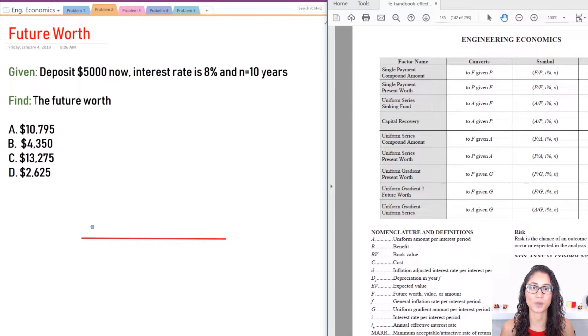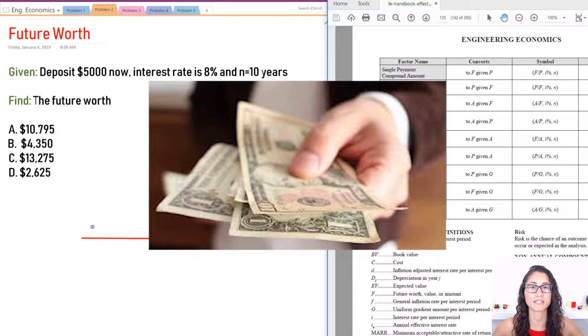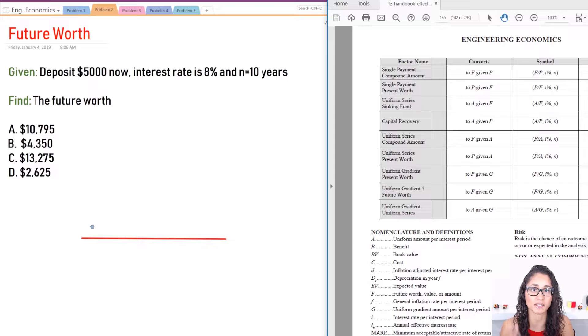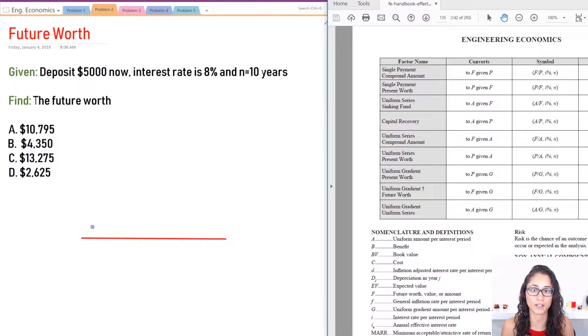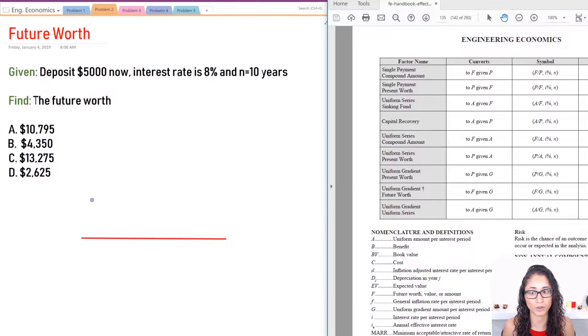Okay so the cash flow diagram usually represents two terms, so we have the inflow and the outflow. The outflow is pretty much anything that comes out of your pocket like costs, repair, maintenance, expenses, taxes, disbursement. These are all outflows and usually they have a negative sign. Now inflow is anything that you make, like savings or receipts, revenues. These are all inflows and usually they have a positive sign. So if you deposit $5,000 now, this is a deposit so it's an outflow and usually outflows we put an arrow down and inflows is arrow up.